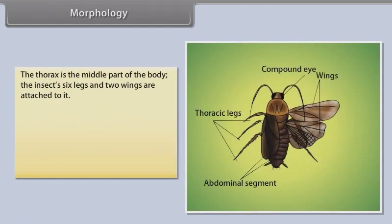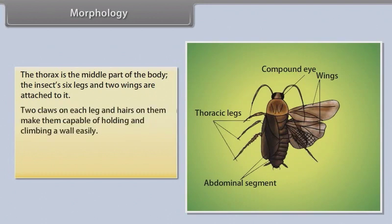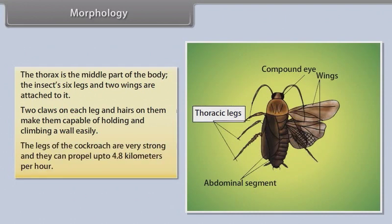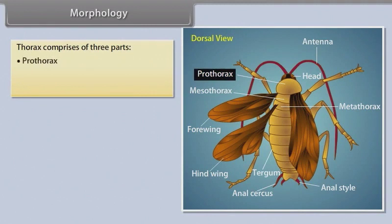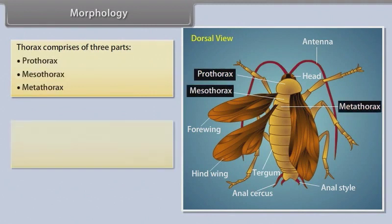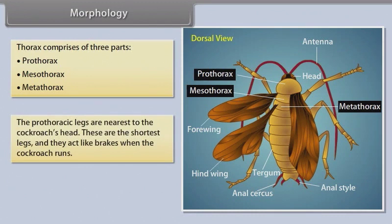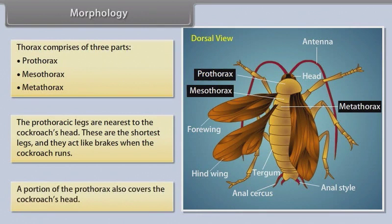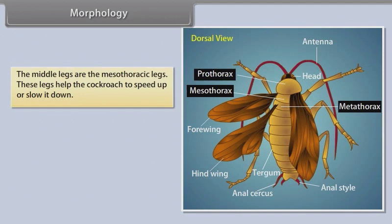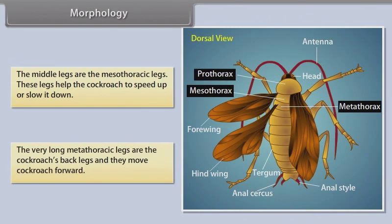The thorax is the middle part of the body; the insect's six legs and two wings are attached to it. Two claws on each leg and hairs make them capable of holding and climbing a wall easily. The legs of the cockroach are very strong and can propel it up to 4.8 kilometres per hour. The thorax comprises three parts: prothorax, mesothorax, and metathorax. The prothorax legs are nearest to the head — shortest and acting like brakes when running. The mesothorax legs help the cockroach speed up or slow down. The very long metathorax legs are the back legs and move the cockroach forward.